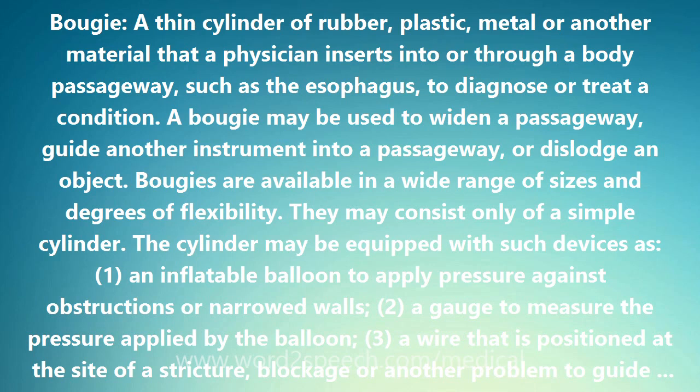The cylinder may be equipped with such devices as: 1, an inflatable balloon to apply pressure against obstructions or narrowed walls; 2, a gauge to measure the pressure applied by the balloon;